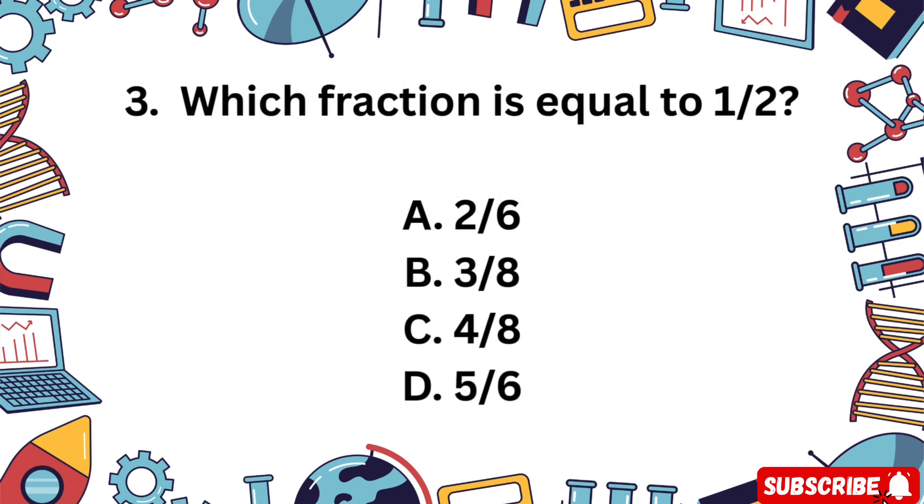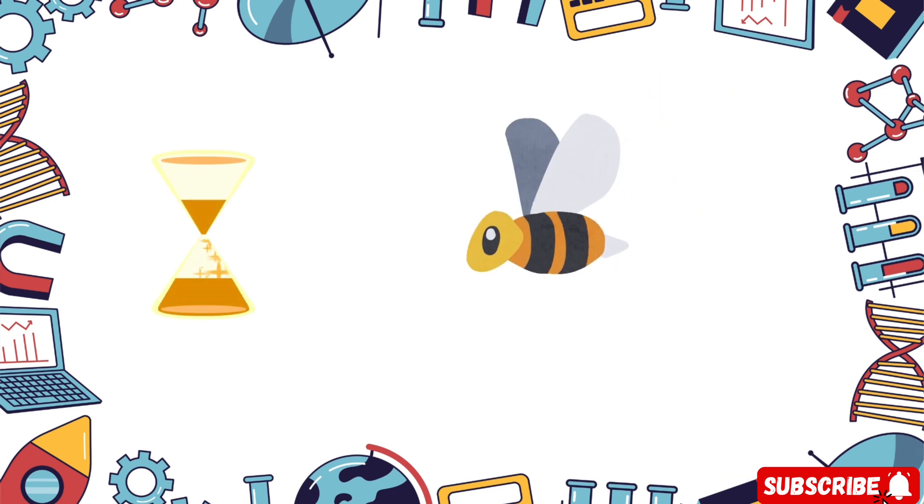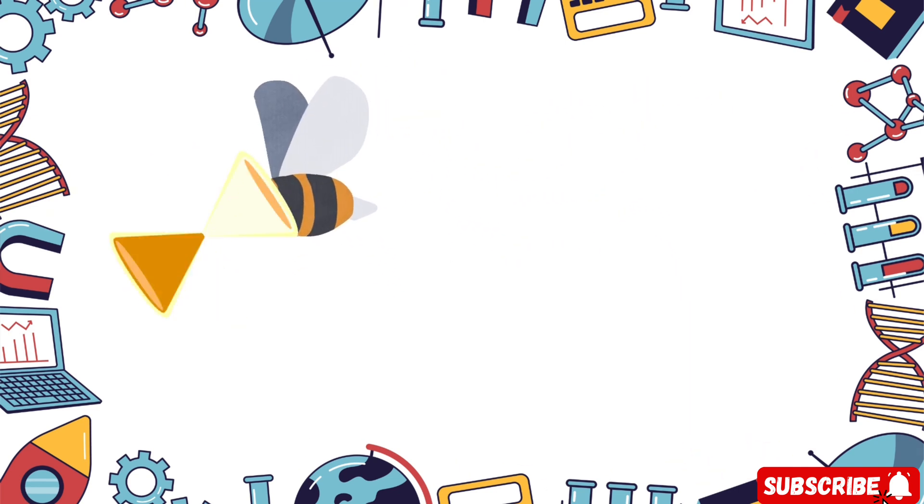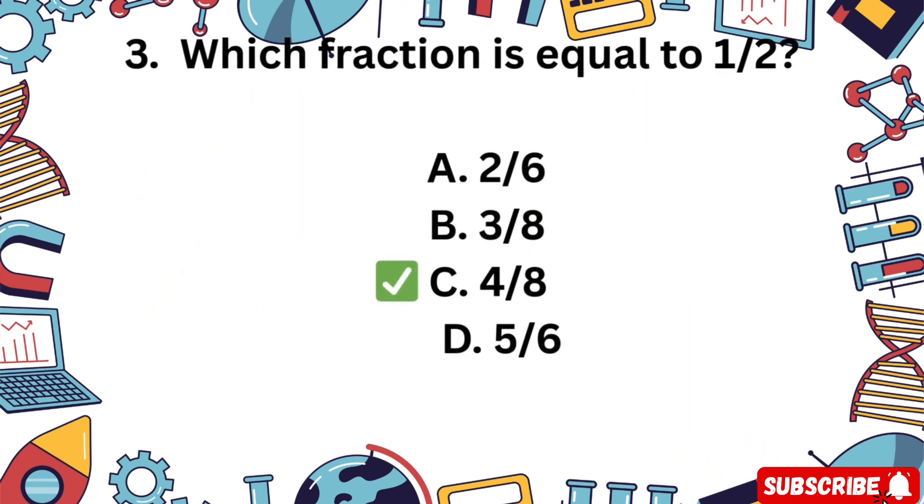Question 3. Which fraction is equal to 1 half? A 2/6, B 3/8, C 4/8, D 5/6. Think carefully. 5 seconds. The correct answer is C 4/8. 4 out of 8 is the same as 1 half.